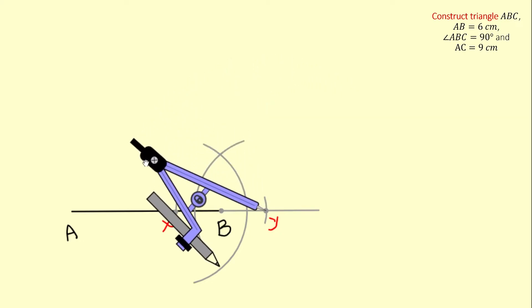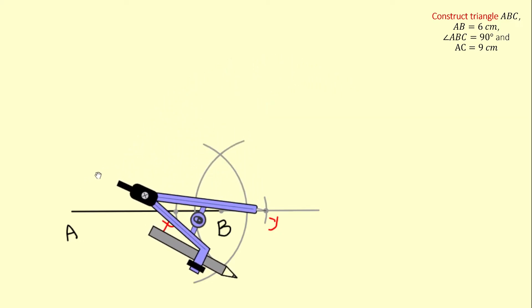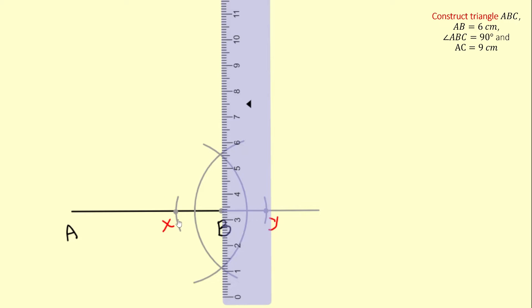Now I am going to use my ruler to draw an extended line that passes through the three points where the two arcs meet as well as point B. I am going to try to make my line as long as possible.